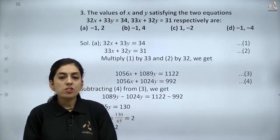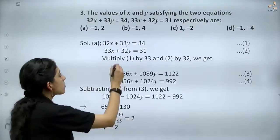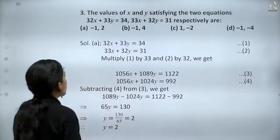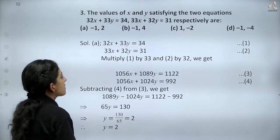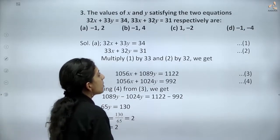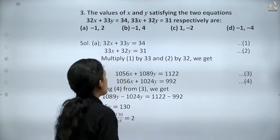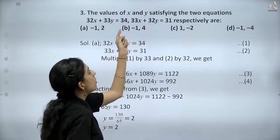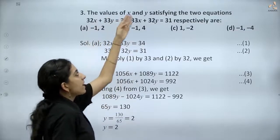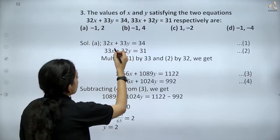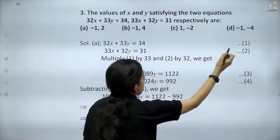Let's move on to the third question. The values of x and y satisfying the two equations 32x + 33y = 34 and 33x + 32y = 31 respectively are... So we are given two linear equations and we have to find the values of x and y. Let's write the first equation as equation (1) and the second equation as equation (2).